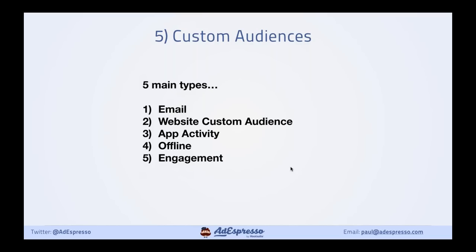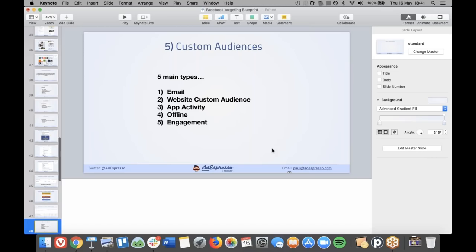We're going to move on to custom audiences now. There are five main types — I'm just going to give you a brief overview, but remember you've got the Custom Audiences ebook with 60-odd pages going through this in detail. The five main types are: an email or data file custom audience; website custom audiences (WCAs) based on pixel events; mobile app audiences; offline audiences for activities like car dealerships where you're not selling online; and loads of engagement audiences.